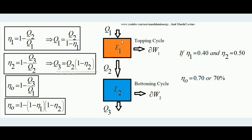Since an engine always operates in the form of a thermodynamic cycle, engine 1 is the topping cycle because heat is rejected from it and engine 2 works on that rejected heat. So engine 1 is the topping cycle heat engine and engine 2 is the bottoming cycle heat engine, delivering ΔW1 and ΔW2 respectively.